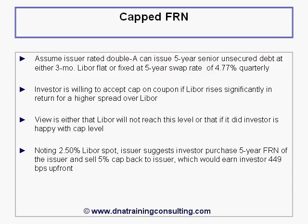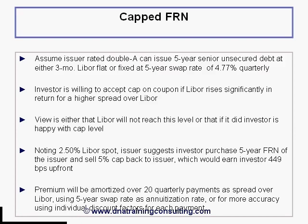Noting that 3-month LIBOR stands today at 2.5% only, the issuer suggests to the investor that she invest her money in a 5-year floater issued by this issuer, and also sell a 5-year cap to the issuer, which would earn her an upfront premium of 449 basis points, as you can confirm from the worksheet. Rather than collecting this premium upfront, however, it is agreed that the premium will be amortized over the life of the FRN and added into the coupon as a positive spread over LIBOR.